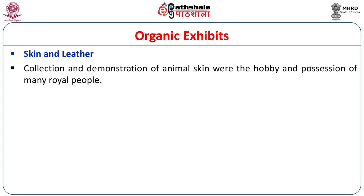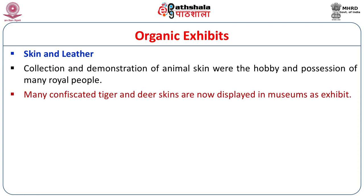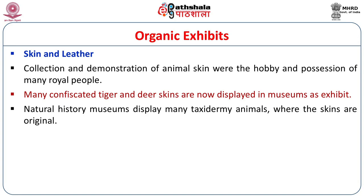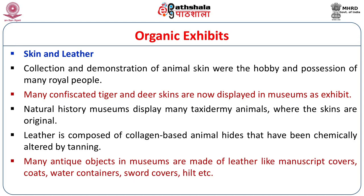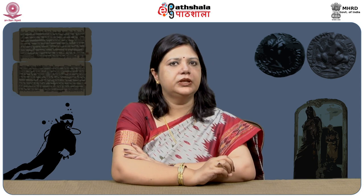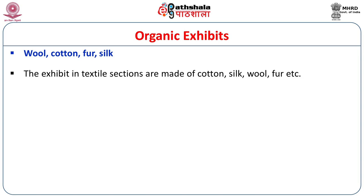Now come to certain products like skin and leather items. Skin and leather items are solely animal products. Collection and display of animal skin were hobbies of many royal people. Many confiscated tiger and deer skins are now displayed in museums as exhibits. Natural History Museums display many taxidermy animals where the skin is original. Leather is composed of collagen-based animal hides that have been chemically altered by tannin. Many antique objects in museums are made of leather like manuscript covers, coats, water containers, sword covers, hilts, etc.